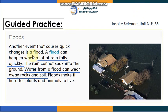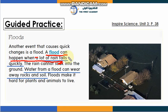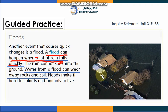I want you to underline this: 'A flood can happen when a lot of rain falls quickly.' This is very important — underline it. A flood can happen when a lot of rain falls quickly, and this is very dangerous for people, plants, and animals.